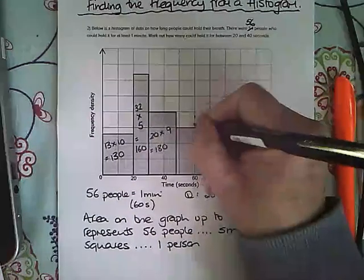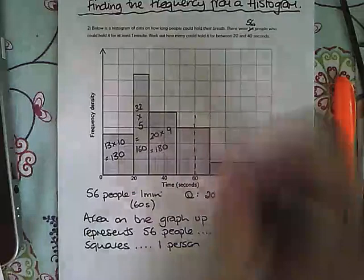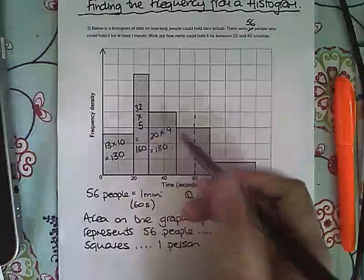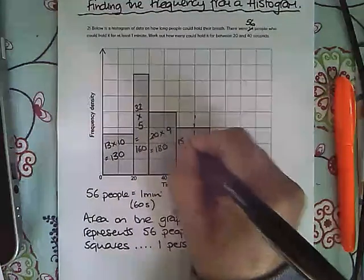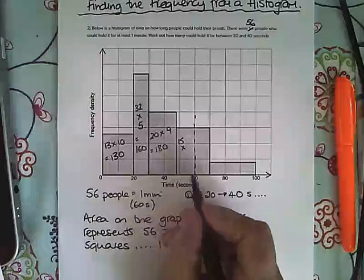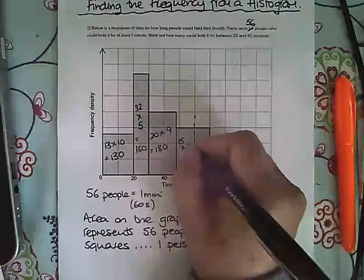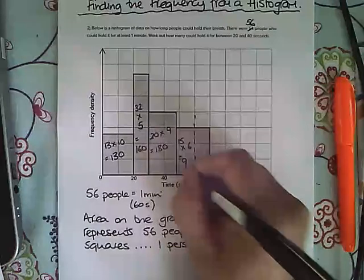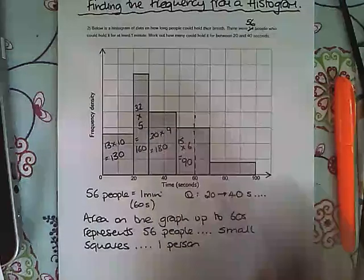So this is 15 tall, and I'm going to multiply that by 6 wide. That means I have got 90 small squares.